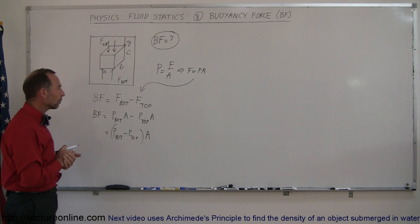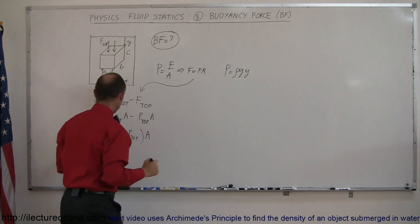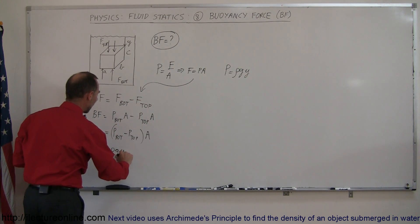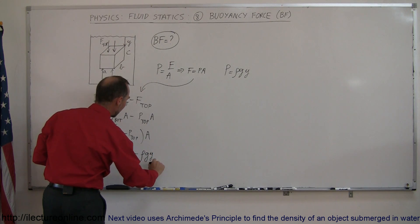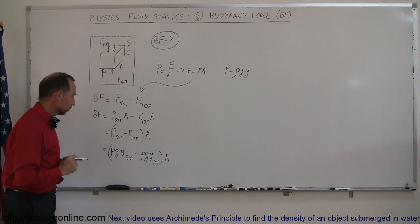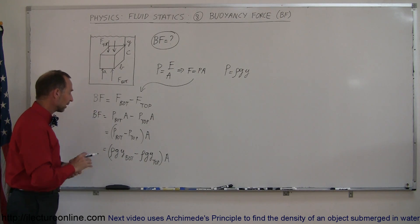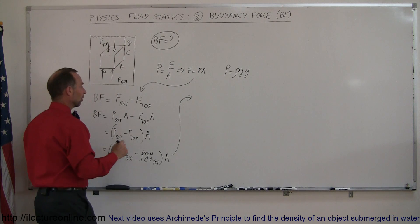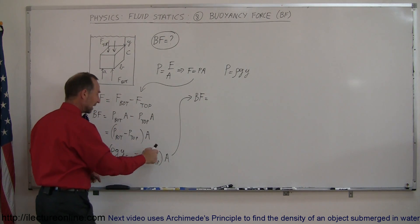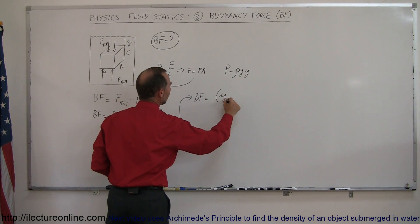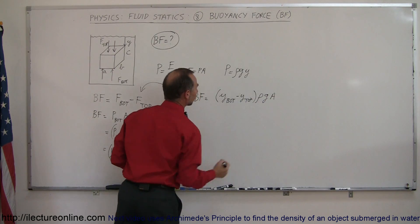The pressure at the bottom can be found using pressure equals rho times g times y. So this becomes rho g times y at the bottom of the cube, minus rho g times y at the top of the cube, times the cross-sectional area. The density is the density of the liquid, which is the same at both top and bottom. G is a constant, so we can factor those out, giving us: buoyancy force equals (y at the bottom minus y at the top) times rho times g times the cross-sectional area.